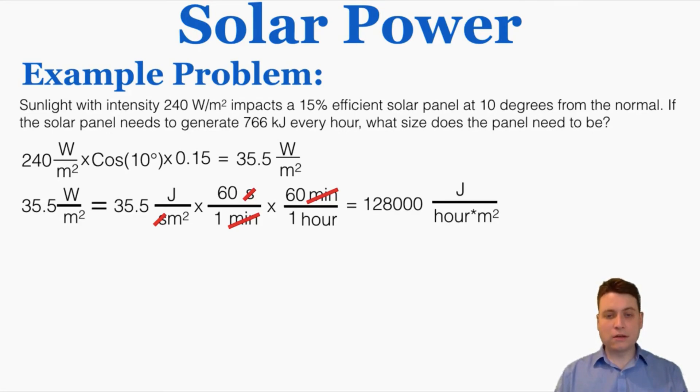That basically means that you're getting 128,000 joules for every hour that you run this, and for every meter squared that it is. So finally to figure out how much area we need, I know that this is the intensity that we're getting out of the solar panel, and that multiplied by the area of the panel is going to equal how much energy we get out of it.